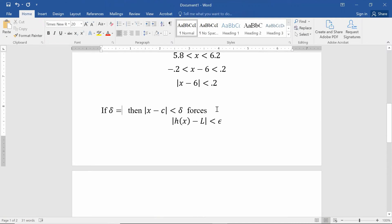So let's go back and look at what this is saying. If delta I'm saying is equal to 0.2, then |x - 6| less than delta or less than 0.2 forces my h(x) to be within 0.1 of my output of 5.